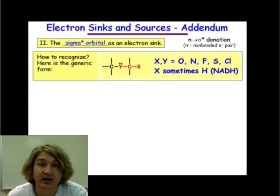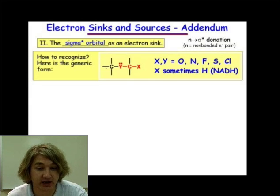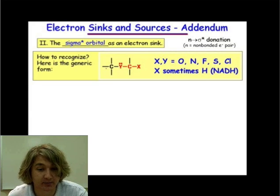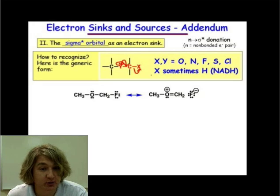How can we recognize the generic form of this type of interaction? It's shown here, where we have a lone pair on some atom designated as Y, donating in, forming a double bond between our Y and our carbon, and kicking off some leaving group X. This X and Y can be oxygen, nitrogen, fluorine, sulfur, or chlorine. And in one particular case, X can sometimes be H. We'll get to that in just a second, but let's discuss the general form first.